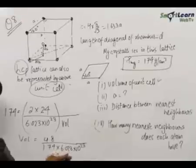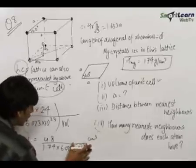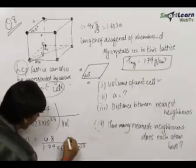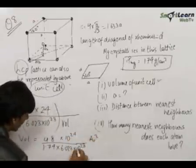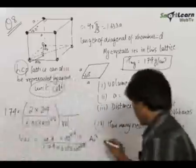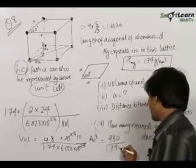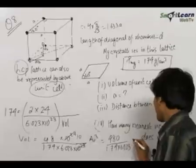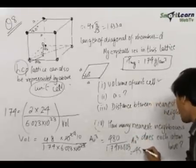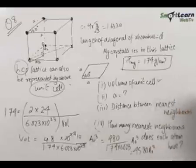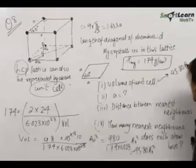The answer is in cm³. Converting to ångströms using 1 cm = 10⁸ Å, we get 1 cm³ = 10²⁴ Å³. This gives us volume = 480 / (1.74 × 6.023) Å³, which equals 45.80 Å³. So our first answer is: the volume of the unit cell equals 45.80 Å³.